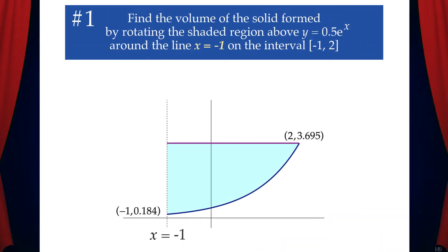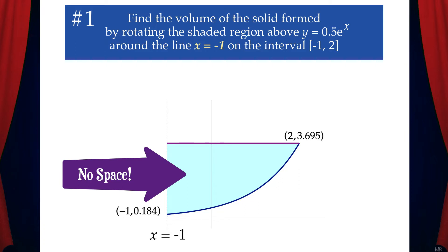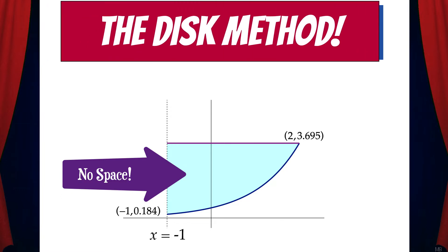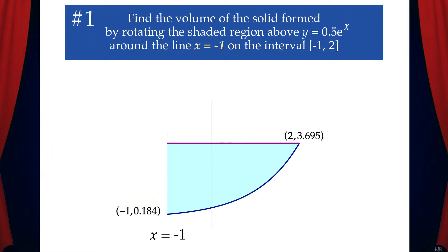Let's do several examples. Problem 1: Find the volume of the solid formed by rotating the shaded region above y equals 0.5e to the x around the line x equals negative 1 on the interval negative 1 to 2. The first thing to note here is that there's no space between the region and the axis of revolution. That means we'll use the disc method. Now we need to determine the radius. The distance from the axis of revolution to the y-axis is 1, and the distance from the y-axis to the curve we'll call f of y.